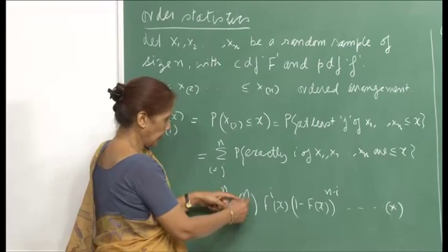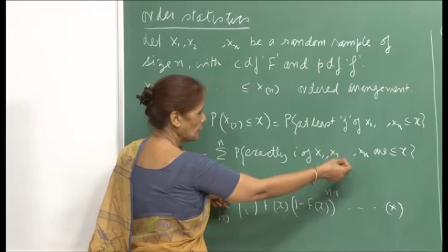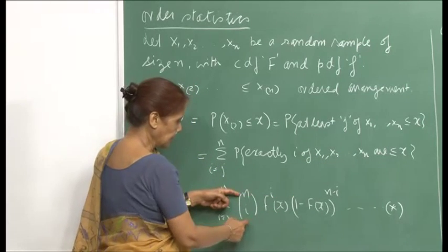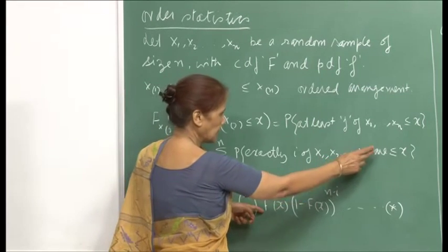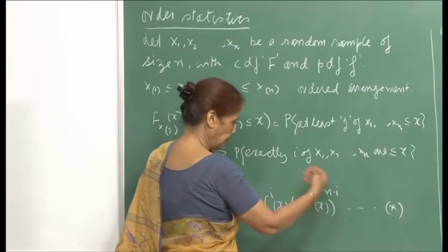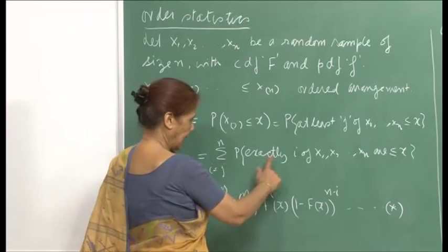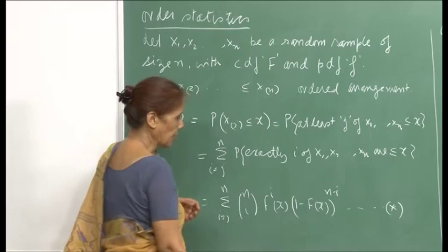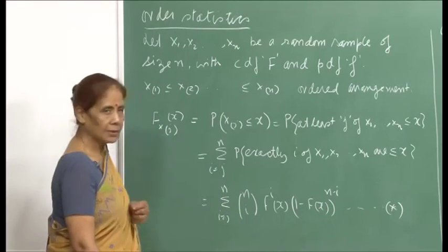Since it is 'at least', it can be j, j+1, j+2, and so on that are less than or equal to x. Therefore, this probability can be written as a summation with i varying from j to n of the probability that exactly i of X_1, X_2, ..., X_n are less than or equal to x. This equals the sum of n choose i times F(x)^i times (1 - F(x))^{n-i}.